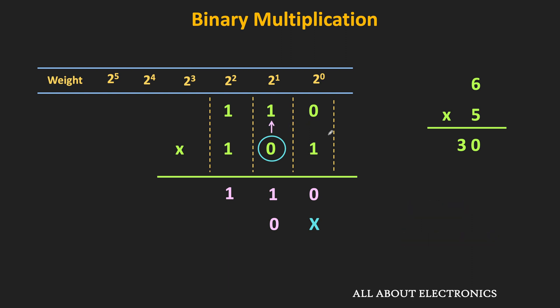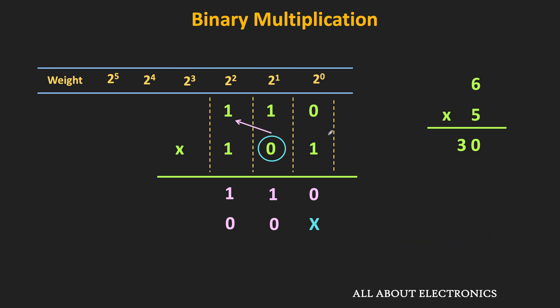Similarly, let us multiply this 0 with the 1. Once again, 0×1 = 0. And the weights of both digits are equal to 2 to the power 1. Therefore, after multiplication, their weight will be equal to 2 to the power 2. So we will place this 0 in the 2^2 column. Likewise, let us multiply this 0 with the MSB. Again, 0×1 = 0. Their weights are 2^1 and 2^2, so their product will be equal to 2 to the power 3. We will place this 0 in the 2^3 column. So we got our second partial product. And as you can see, while multiplying the second digit, this partial product is shifted to the left by 1 bit position.